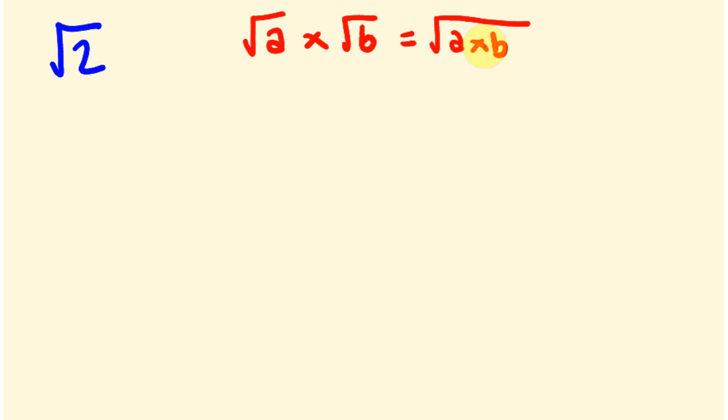Another really important property is that surds can be simplified by expressing the number under the root sign as a product of factors, where one of those factors is a perfect square. So if one of the factors of the number under the root is a perfect square, you can simplify further. For example, the square root of 12 has 4 as a factor, so it can be simplified.